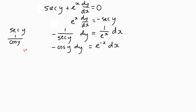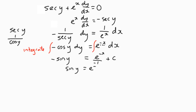We want to integrate both sides, so we can introduce our integral symbol and work out the answers. Negative cos y integrates to negative sin y on the left-hand side. e to the negative x integrates to e to the negative x divided by the derivative of the inside function, which is negative 1. And we've got plus c as our constant of integration. So multiplying both sides by negative 1, we end up with sin y equals e to the negative x plus c.